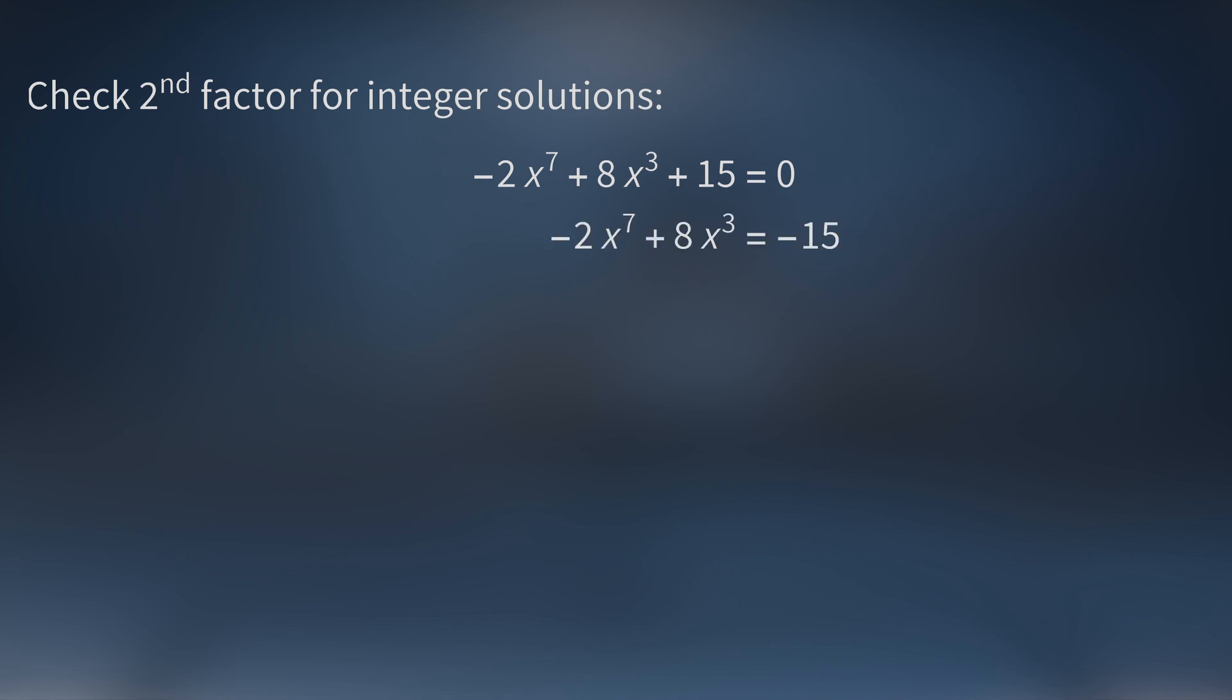Here's the clever trick. Move the constant term to the other side. This means that every term on the left-hand side contains a power of x. So let's simply factor out x. We could factor out x cubed, but to see the trick, we need to factor out just x.